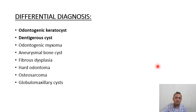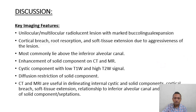Differential diagnosis: in this kind of presentation the most common differentials are odontogenic keratocyst, dentigerous cyst; we should also consider odontogenic myxoma, aneurysmal bone cyst, fibrous dysplasia, complex odontoma, osteosarcoma, and globulomaxillary cyst.